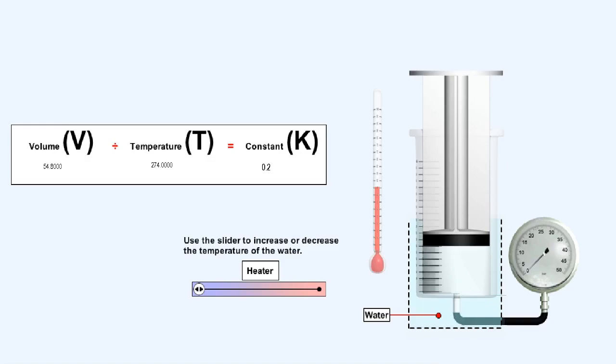Remember that, in theory, the pressure inside the syringe remains constant also. Try changing the temperature of the water for yourself, and notice that the results of the volume divided by the temperature remain a constant.